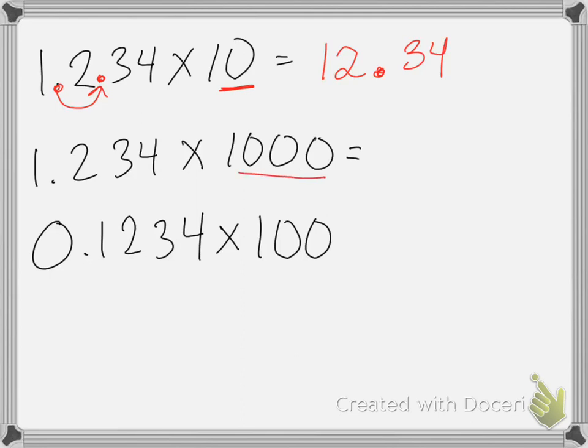If I want to multiply that by 1,000, then I'm going to take that decimal place and move it to the right three times because there's three zeros. So 1, 2, 3. So my answer is going to be 1,234.